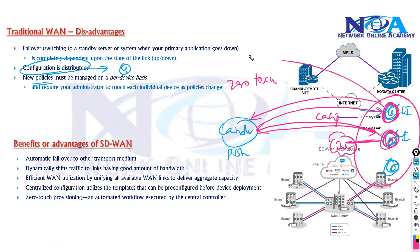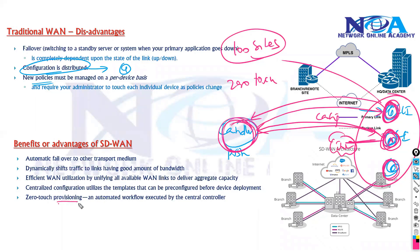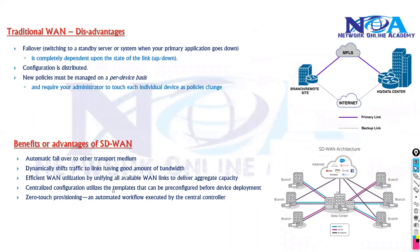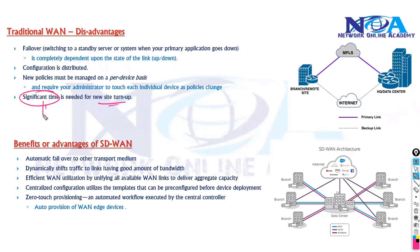If you want to add hundreds of sites, you don't need to go to each and every device. As long as the physical device is connected to the internet, you can push all configurations to hundreds of sites from a single centralized place without touching each device individually. This is what we call auto-provisioning of your WAN edge devices. With traditional WAN, this takes a significant amount of time because you have to go to each site and do manual configurations.